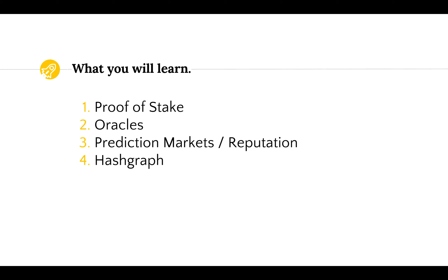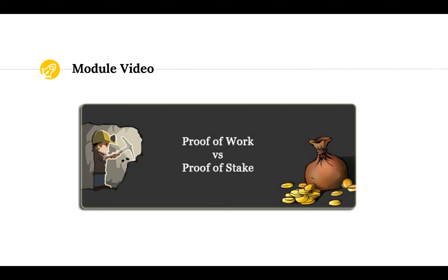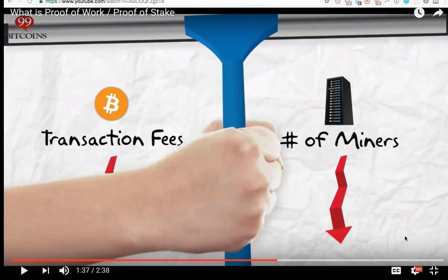In this module, you're going to learn about proof of stake, oracles, prediction markets and reputation, and hashgraph. So let's start with a video on proof of stake, which is the most popular alternative consensus model to Bitcoin's proof of work.